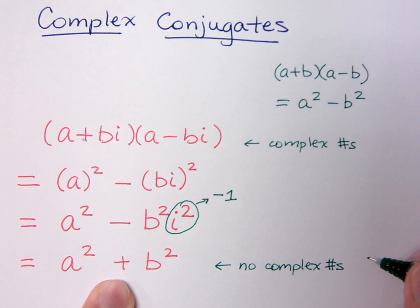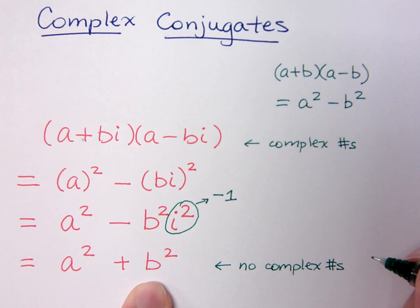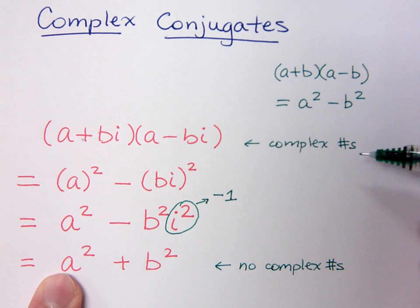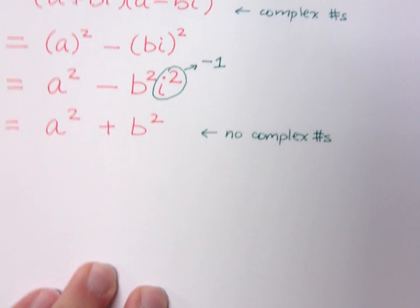And if you remember with factoring binomials, when we had a squared plus b squared, we said this does not factor, but we said it doesn't factor over real numbers. And you see why it doesn't factor over real numbers: because it came from multiplying complex numbers. So using this idea of complex conjugates and the sum of squares will help us do some products.